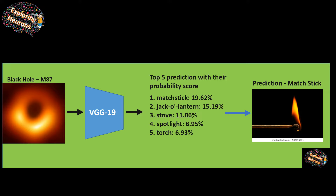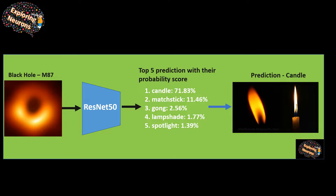I also fed it into VGG19, which predicted matchstick at 19%, along with some lantern, stuff, and spotlight — again recognizing a bright burning flame. Then I fed it into ResNet50, which predicted with very high probability — around 70% — that it looks like a candle, or a matchstick, lampshade, or spotlight. So all the algorithms are doing pretty well in recognizing the black hole image as some flame-like object.